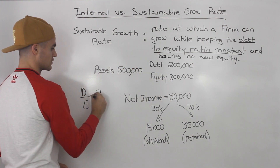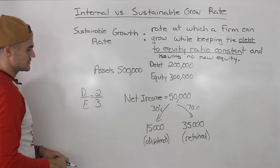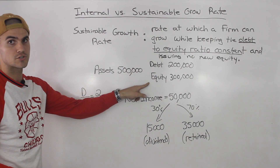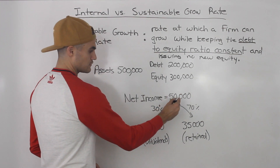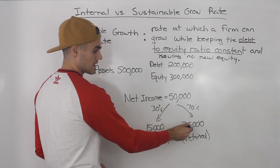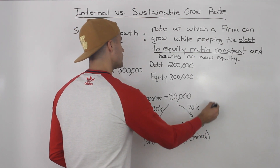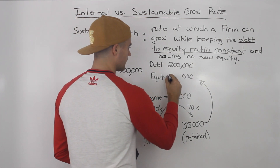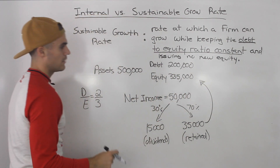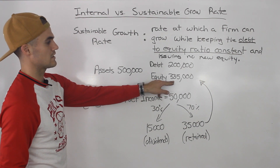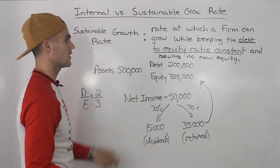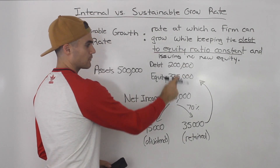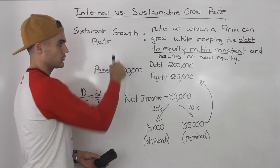The current debt-to-equity ratio is $200,000 / $300,000, which reduces to 2/3. So the new balance sheet must also have a debt-to-equity ratio of 2/3. Net income is $50,000; 30% paid as dividends = $15,000; 70% retained = $35,000. That $35,000 flows into equity, so the new equity grows organically to $335,000. The equity grew by $35,000 — the same as in the internal growth rate calculation.